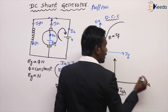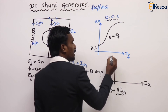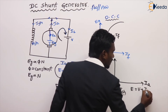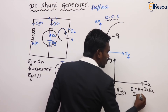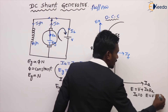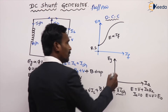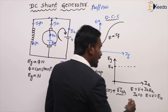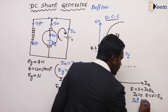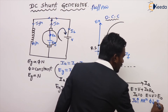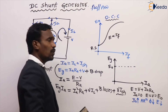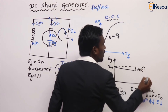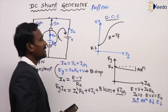Internal characteristics are drawn between armature current and generated EMF. When armature current is zero, EG = V + IA×RA, and if IA = 0, then E = V = E₀, the no-load EMF. When IA increases, armature reaction increases, flux decreases, and EMF decreases. This drop represents the armature reaction drop. This is the internal characteristic.